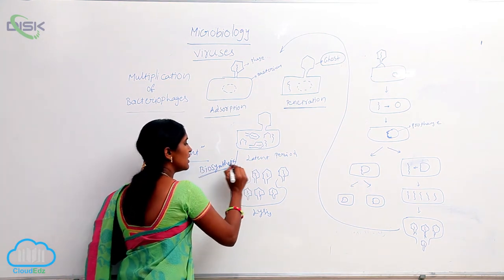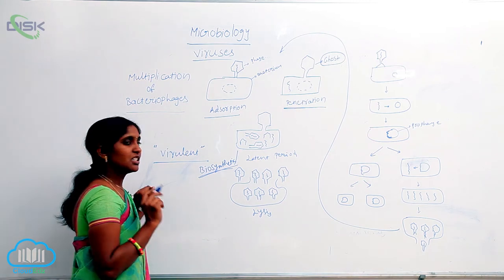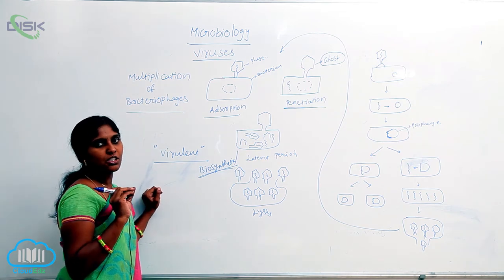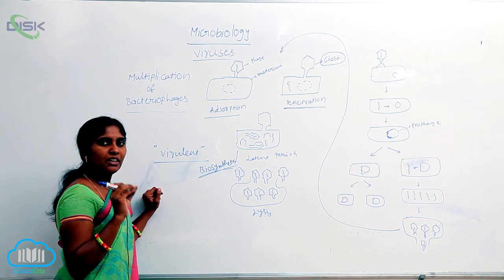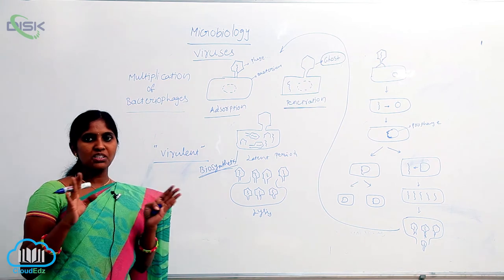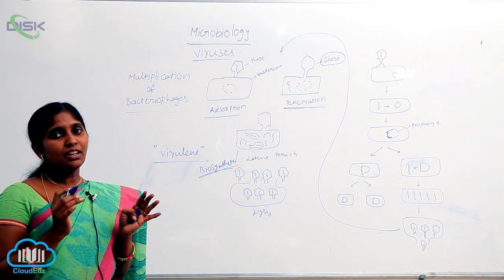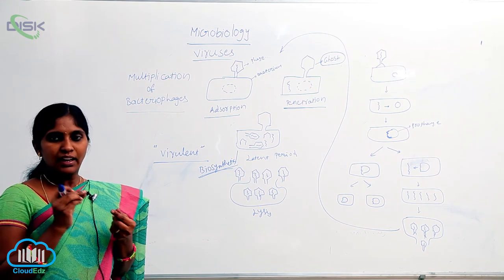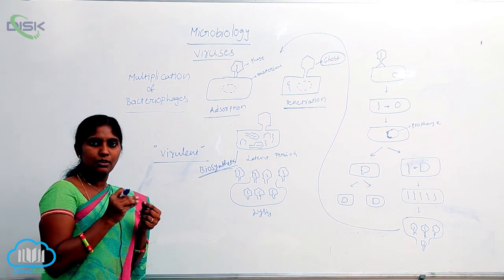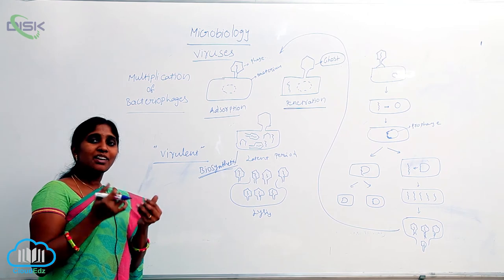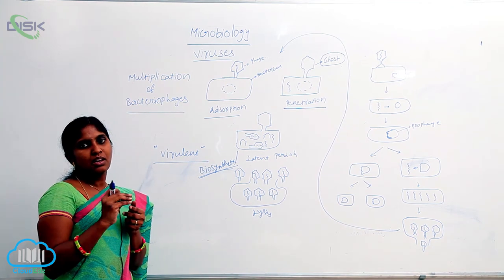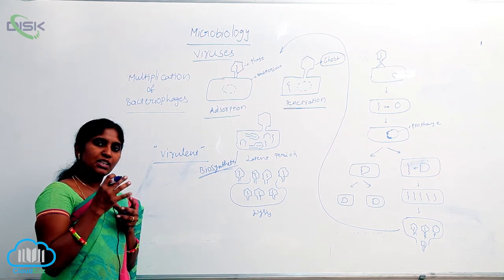The biosynthetic stage is divided into two steps: eclipse stage and maturation stage. Eclipse stage means from viral DNA entry to the formation of viral particles — during that duration, biosynthetic pathways are carried out. The protein coat (head), nucleic acid replication (DNA), capsomeres, tail, and nucleic acids are prepared or synthesized in that stage.